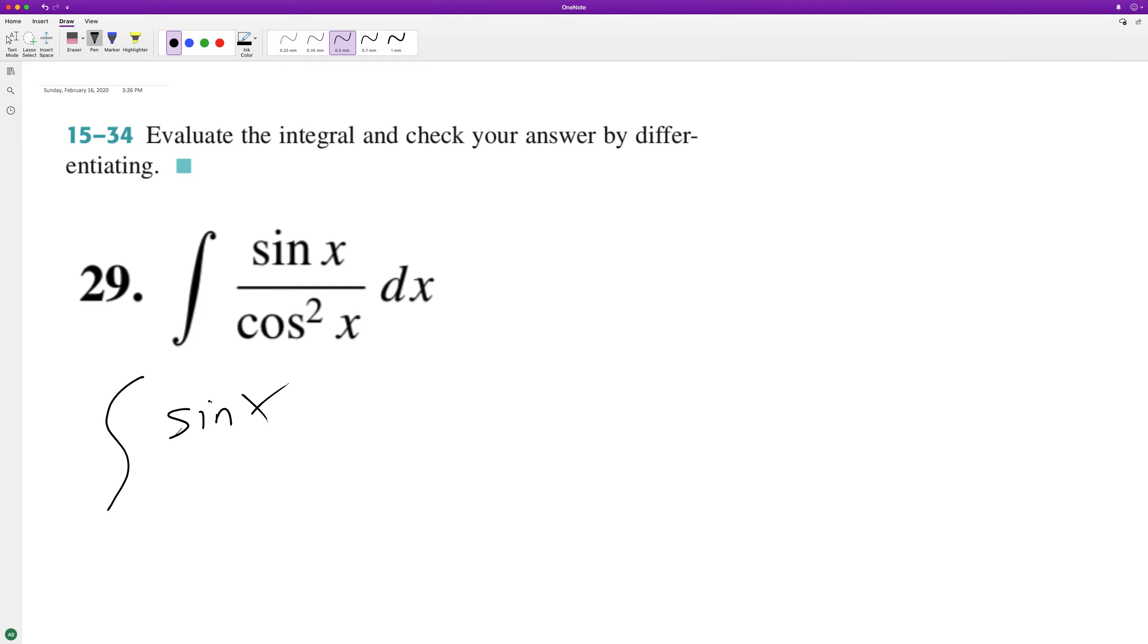So sine of X and then cosine on the bottom could be broken down to cosine of X, cosine of X. So sine of X over cosine of X times one over cosine of X. This is exactly what we have above.